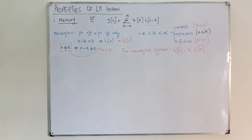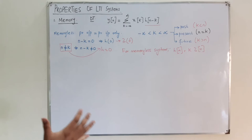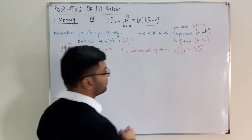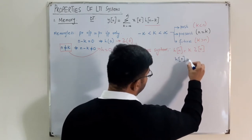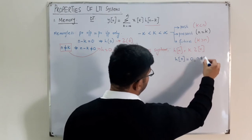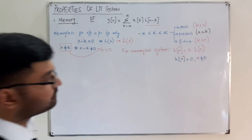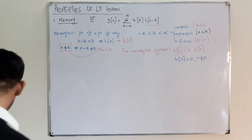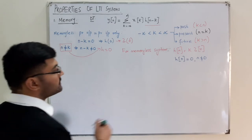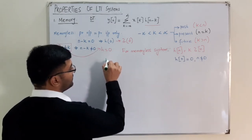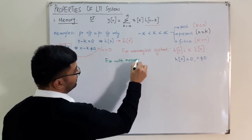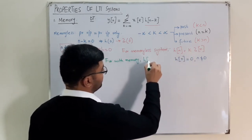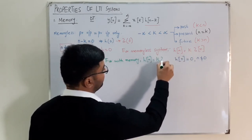This means h[n] = k·δ[n], so h[n] = 0 when n ≠ 0 — it is an impulse located at zero. That is the criterion for a memoryless system. For a system with memory, the opposite is true: h[n] is not a scalar multiple of δ[n].